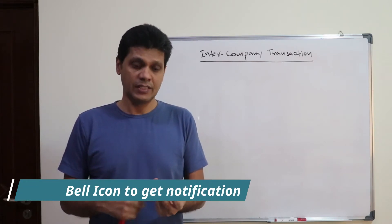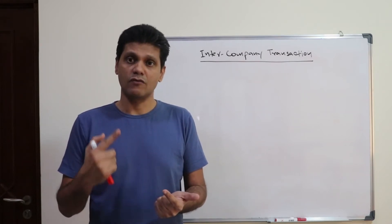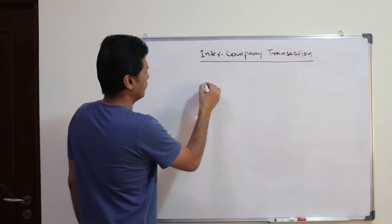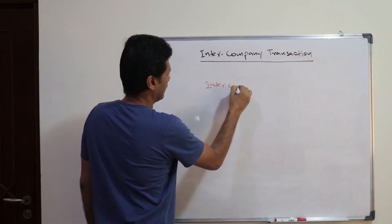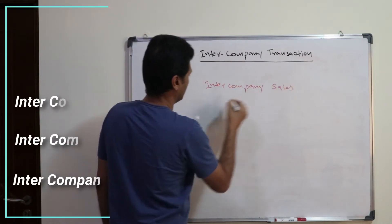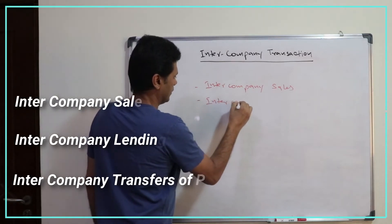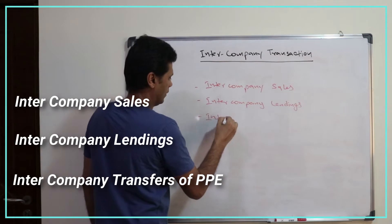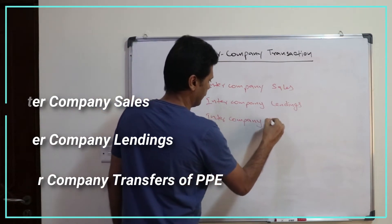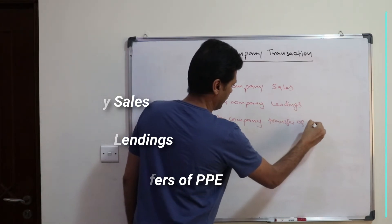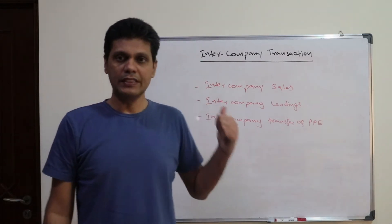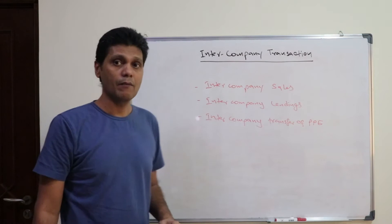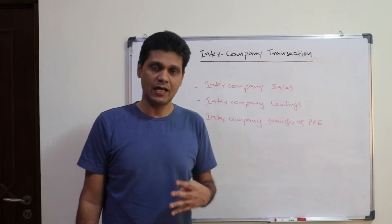Intercompany transactions mainly consist of intercompany sales, intercompany lendings, and intercompany transfers of property, plant and equipment. These are the areas that will be tested in your exam. So first and foremost, let me discuss intercompany sales by taking an illustration.